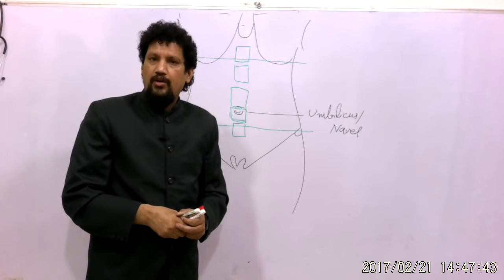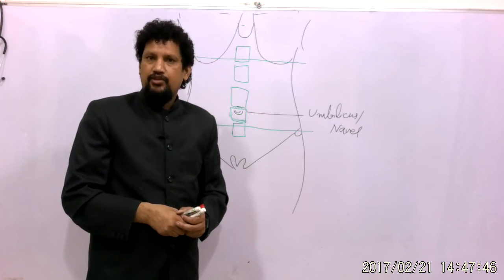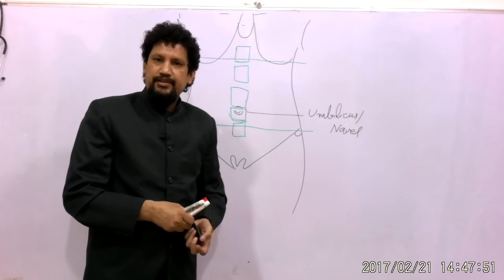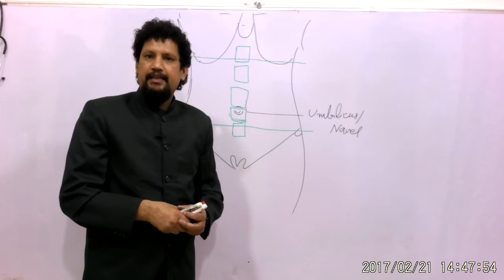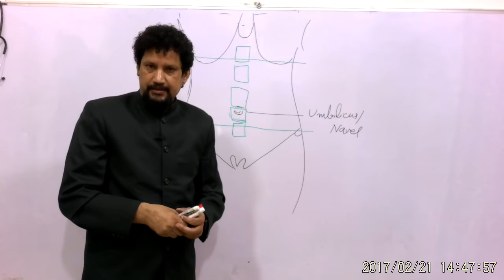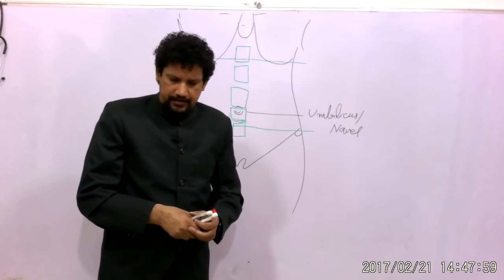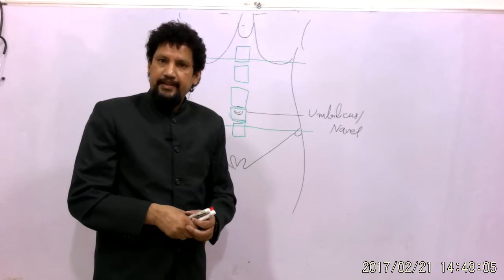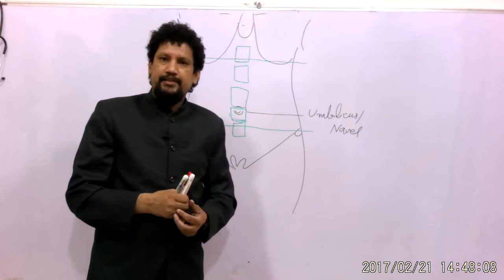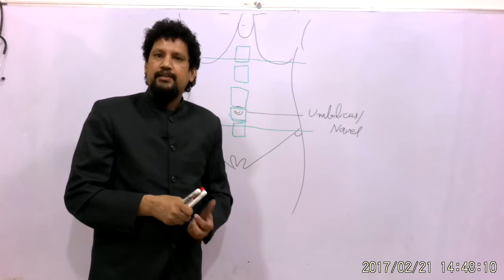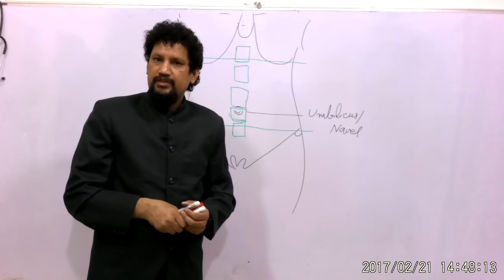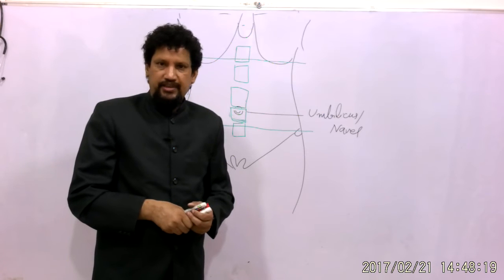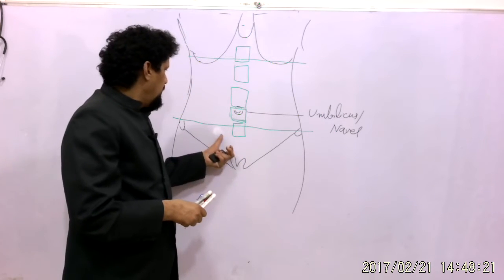The transtubercular plane, passing through the two tubercles of the iliac crest, is used to count the intervertebral spaces in the lumbar region. For lumbar puncture, a sample of CSF is taken or a needle is inserted for therapeutic use through the lumbar vertebral junction, so this plane helps count the lumbar vertebrae.